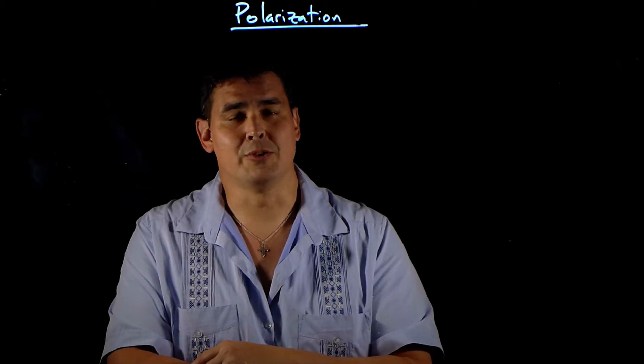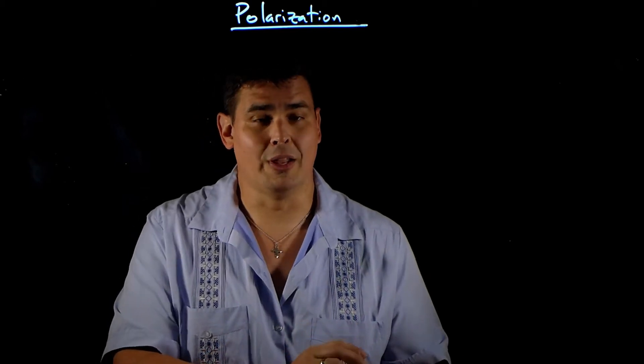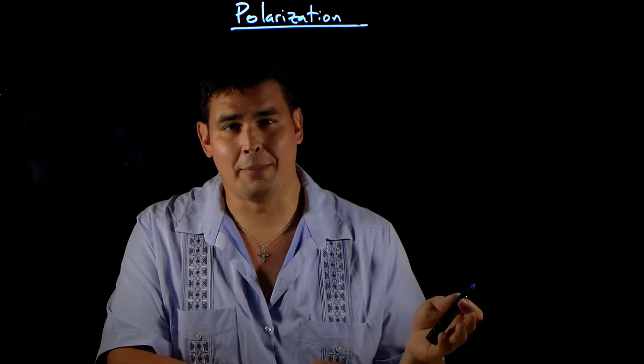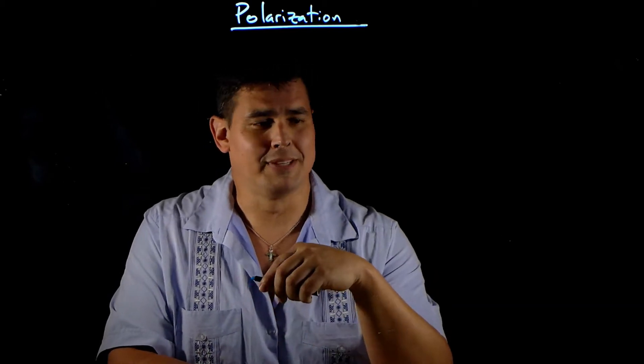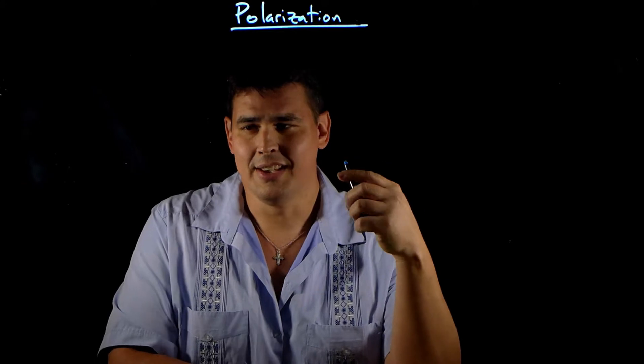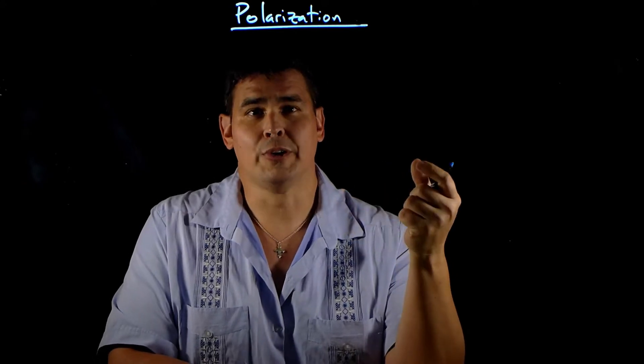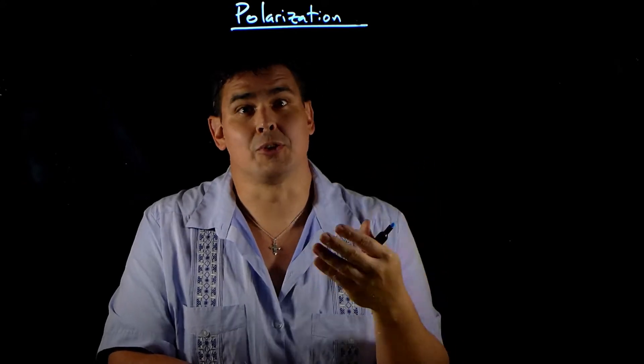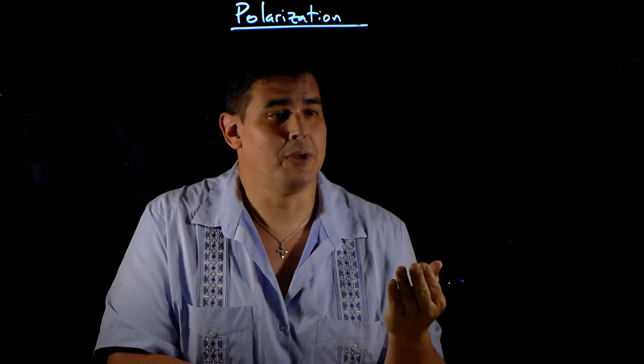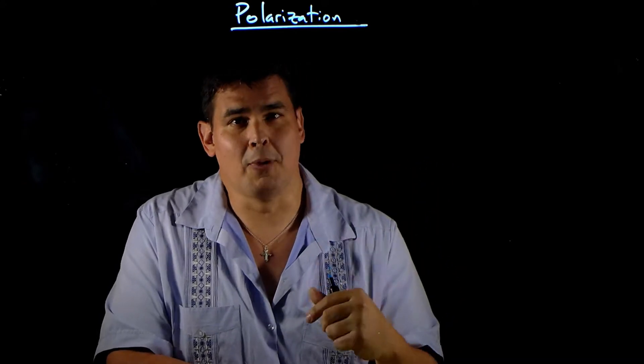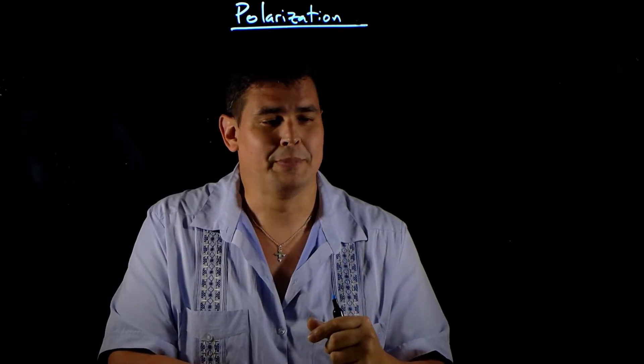In this video we're going to look at polarizers. Polarizers are in a whole lot of things like camera optics, telescope optics, sunglasses, phone screens, computer screens. The screen you're watching this video on right now probably has a polarizer on front of it.